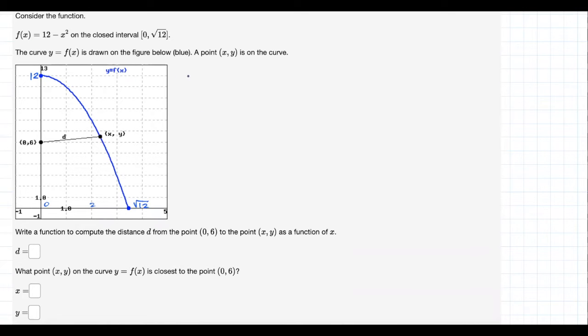All right, so now they want us to find a function d, which is going to be the distance between this base point and this arbitrary point. So now using our distance formula then, that should be equal to x minus 0 squared plus y minus 6 squared.